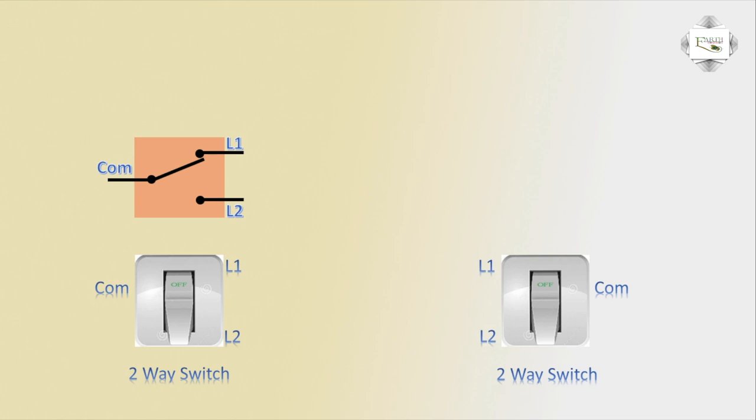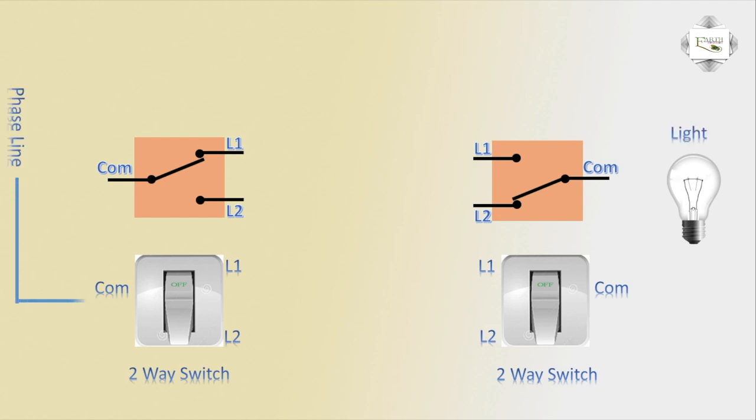Load light 220 volt. Phase line input common terminal, first switch line one to line one common, short line one.